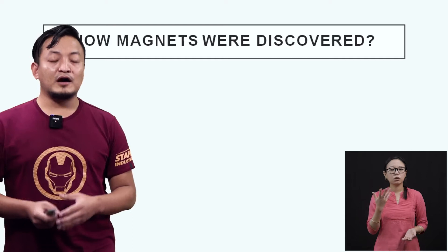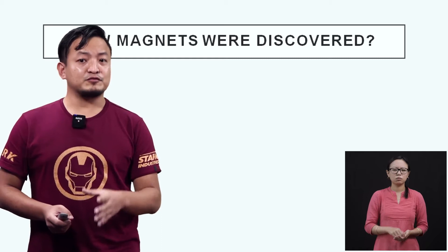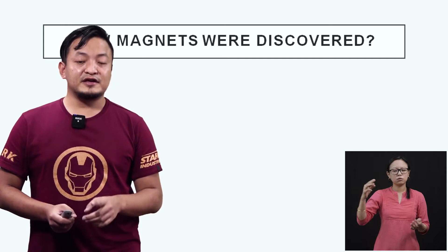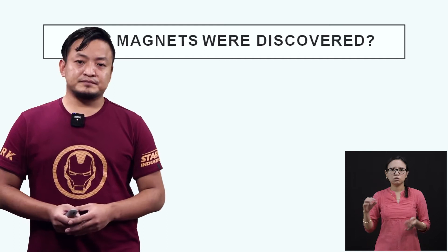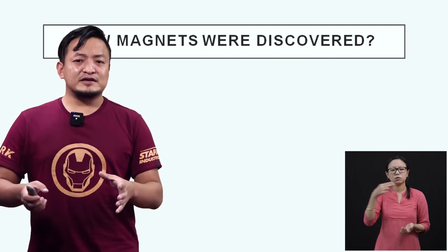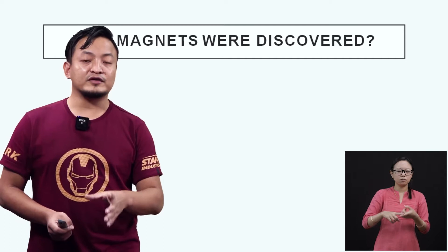Now we will discuss how these magnets were discovered. The story I will tell you about how magnets were discovered is about a shepherd named Magnus — M-A-G-N-E-S, Magnus. He was a shepherd, and he lived in a town called Magnesia. That was in Greece. Greece is the name of a country.